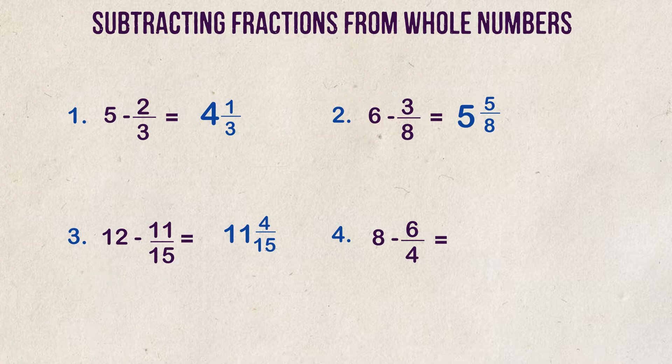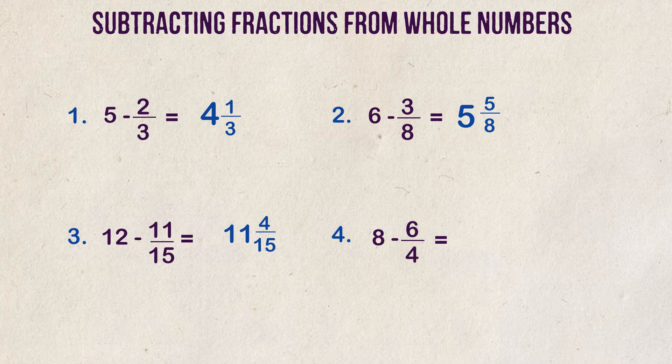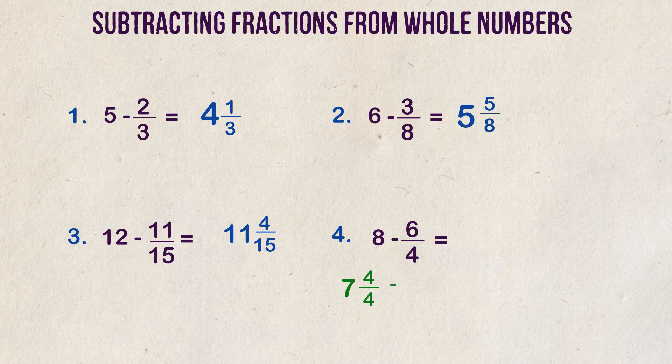Example 4. What is 8 minus 6 fourths? So I set this example up for a reason. The number we're subtracting is an improper fraction. What we can do is convert this improper fraction to a mixed number and then follow the same steps we did in example 3. Let's make our whole number of 8 to be 7 and 4 fourths. Let's also convert our improper fraction of 6 fourths to be a mixed number. That mixed number is 1 and 2 fourths.